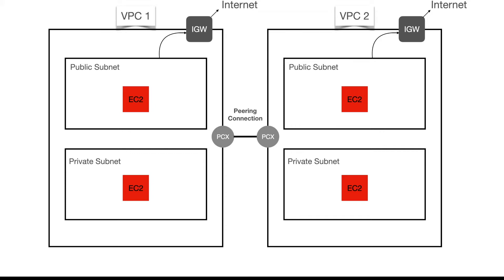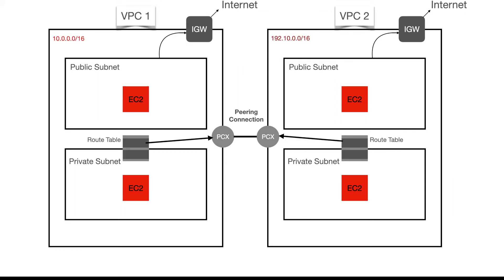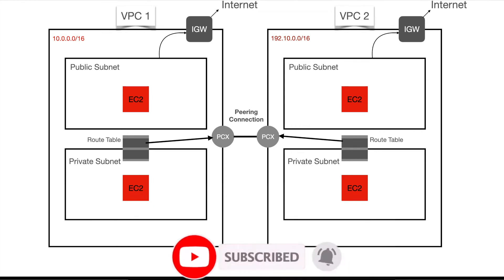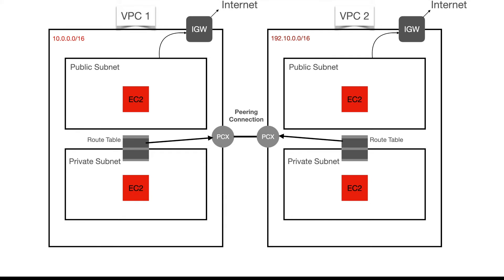We will set up the peering connection, and then we'll have a route table associated with the private subnet in both VPCs. We'll create one route pointing to the second VPC through PCX (the peering connection), same for both. The IP addresses are 10.0.0.0/16 for VPC1 and 192.10.0.0/16 for VPC2. Let's jump into the management console.